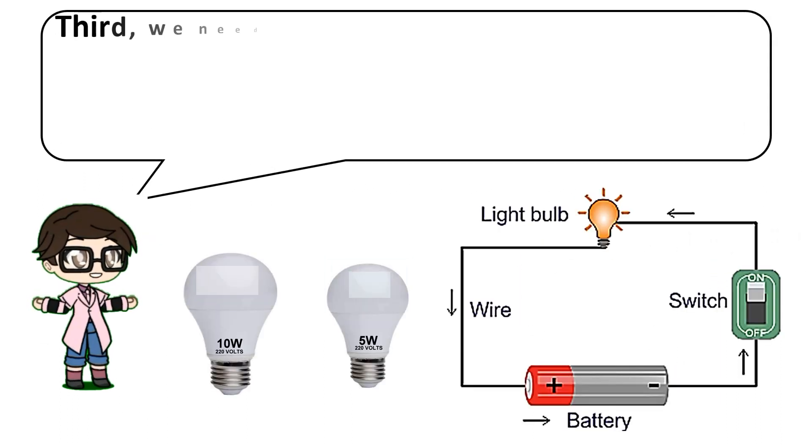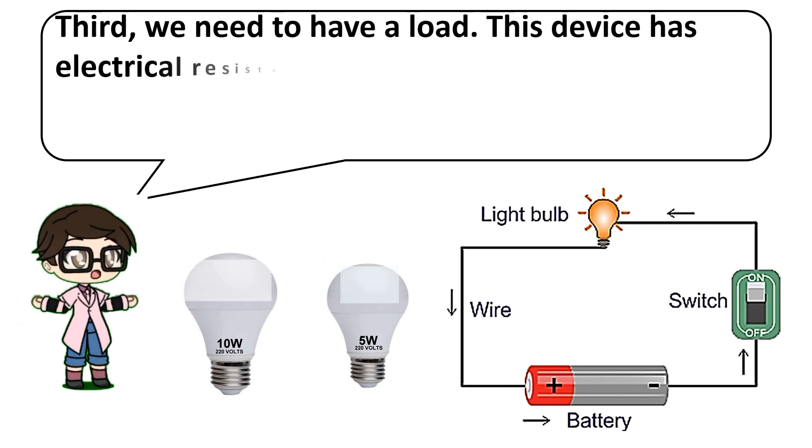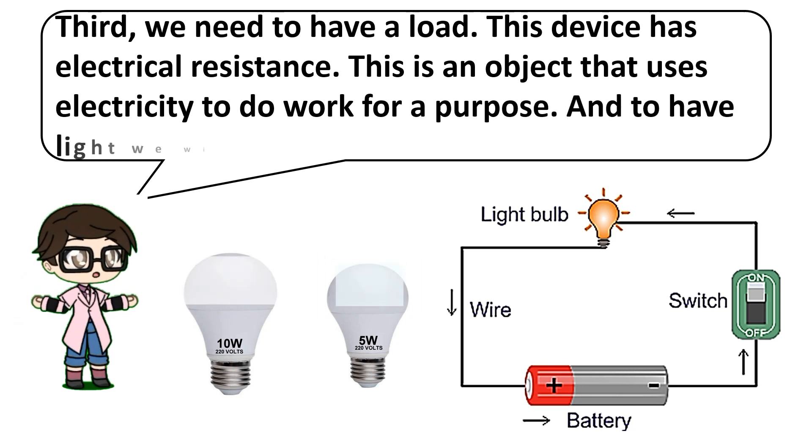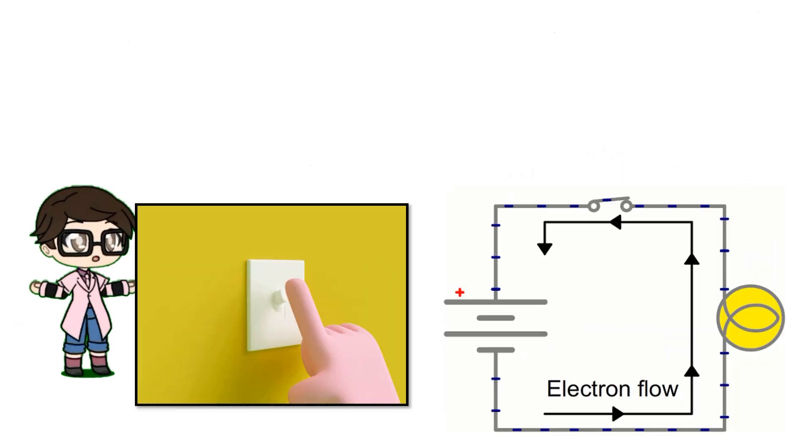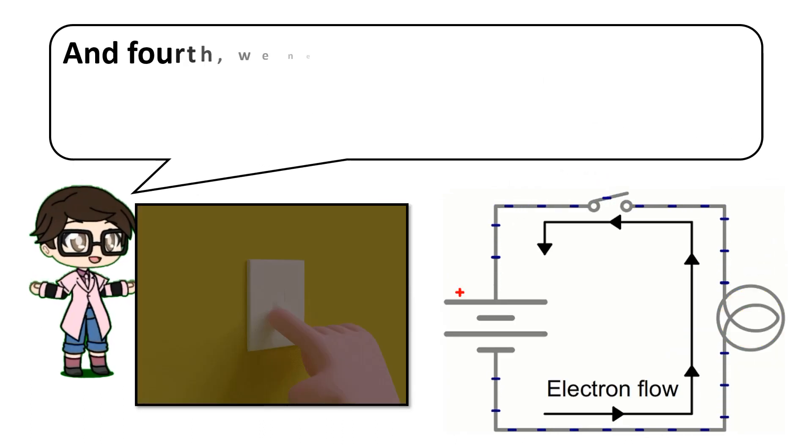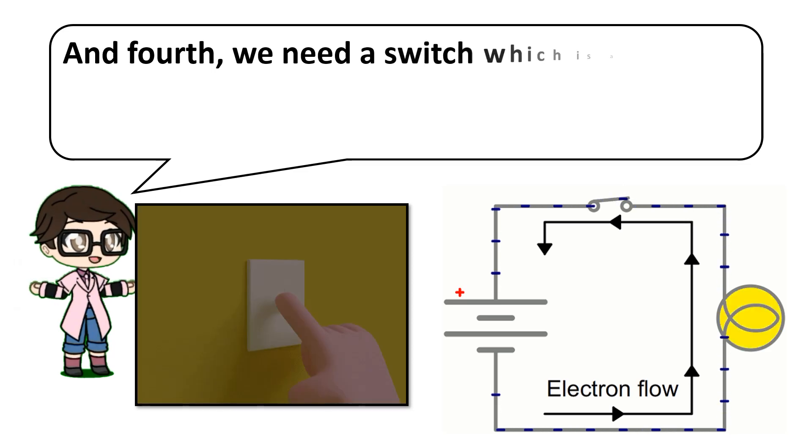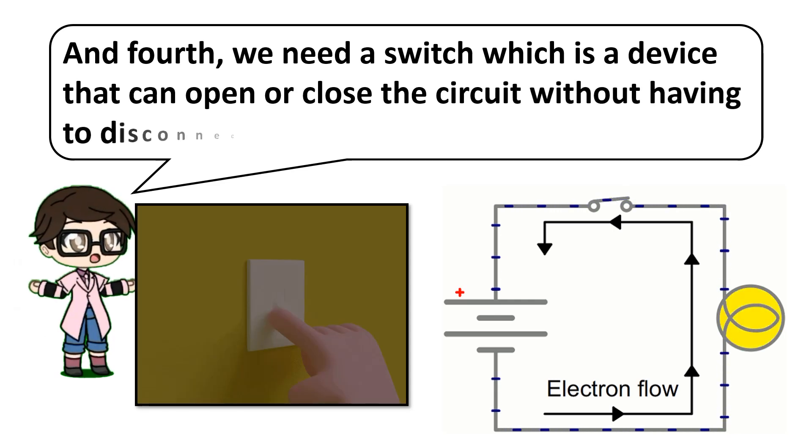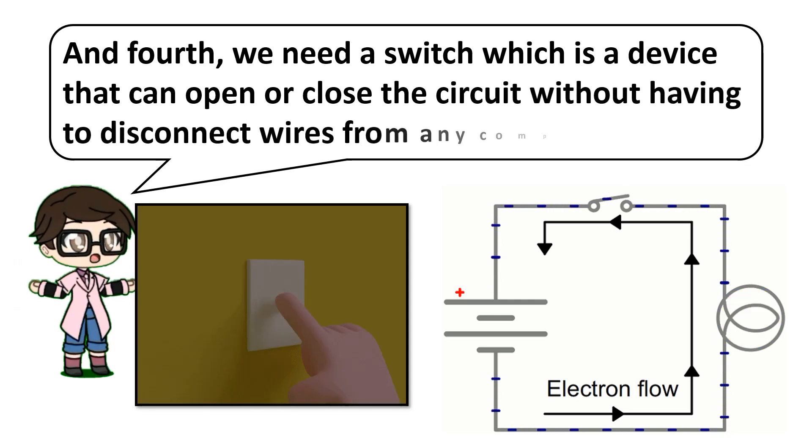Third, we need to have a load. This device has electrical resistance. This is an object that uses electricity to do work for a purpose, and to have light we will use a light bulb. And fourth, we need a switch which is a device that can open or close the circuit without having to disconnect wire.